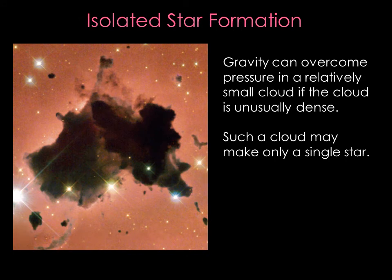Gravity can overcome pressure in a relatively small cloud if the cloud is unusually dense. Even a cloud with just a few solar masses of material can form a single star, as long as the cloud is sufficiently dense and cool.